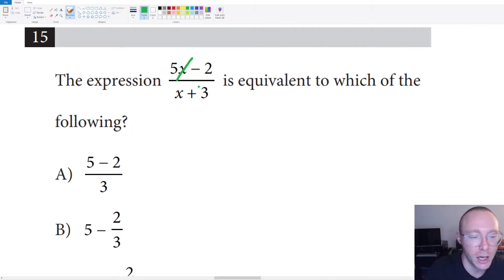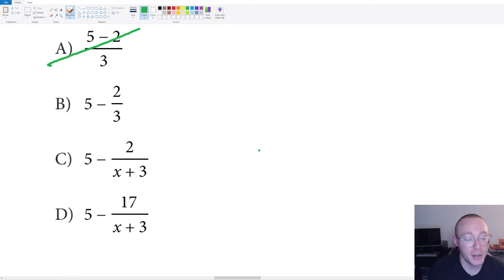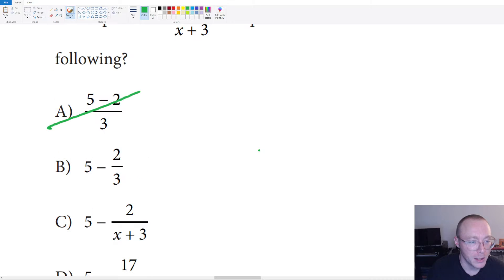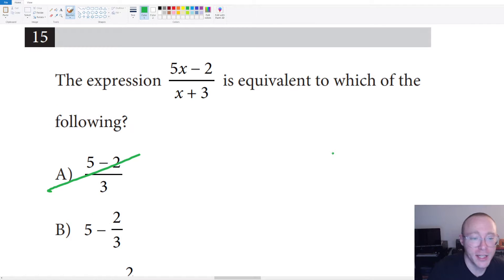especially if we end up having something adding or subtracting with them. So that really leaves us with B, C, and D. So how can we take this fraction? We have five X minus two. How can we take this fraction and split it up into two parts?